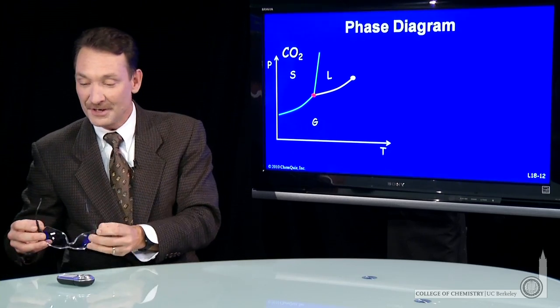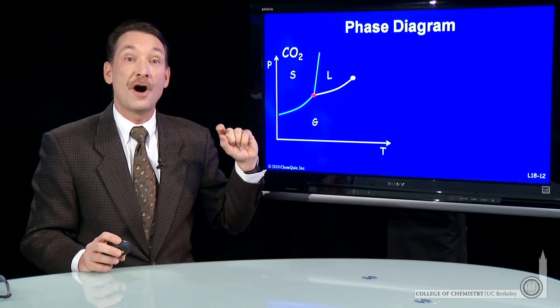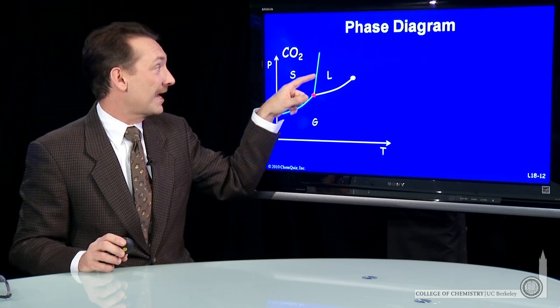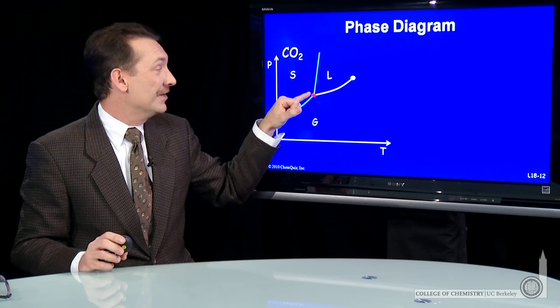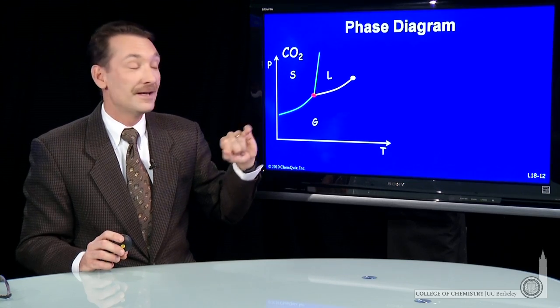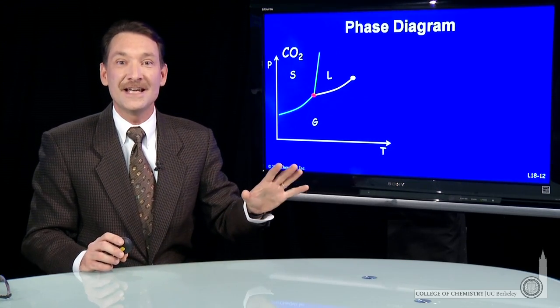Now let's talk about some other regions on the phase diagram. Interestingly, there's a point where all three of the solid, liquid, and gas phases intersect. This is called the triple point. The triple point is where the solid, liquid, and gas phase exist in equilibrium.